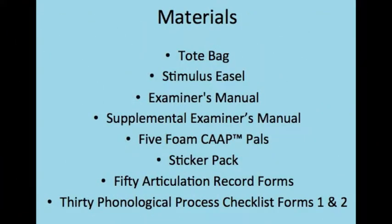The CAP test comes with a stimulus easel, an examiner's manual, a supplemental examiner's manual, five foam CAT PALs, a sticker pack, 50 articulation record forms, 30 phonological process checklist forms one and two, and all of these items come in a convenient tote bag.